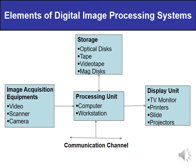Let us start one by one. First are the elements of digital image processing systems. The diagram shows the required elements in a digital image processing system. First and foremost, the required equipment is image acquisition — capturing the image by sensors. Some examples are video scanner and camera. There is also a requirement of mass storage in digital image processing.